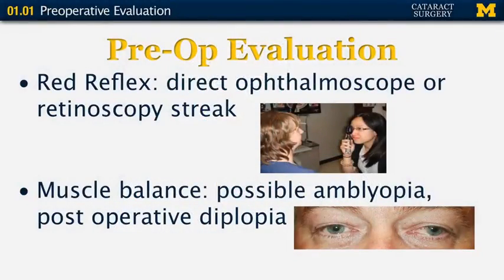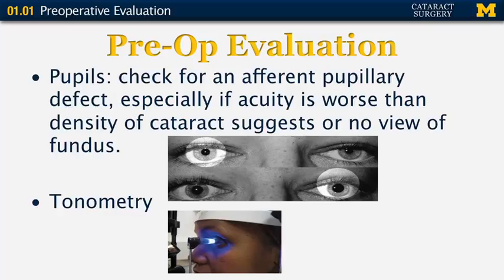Muscle balance examination is also very important. Here you see a patient with a small right exotropia. You have to consider that if that is old, the patient might be amblyopic in that eye, or if it is recent and possibly due to decreased vision, they might experience some postoperative diplopia. The pupil examination is important, especially if the view into the eye is poor — we have to check for an afferent pupillary defect. Tonometry is also very important as part of routine examination and testing for glaucoma.